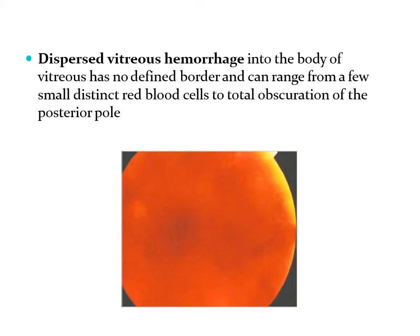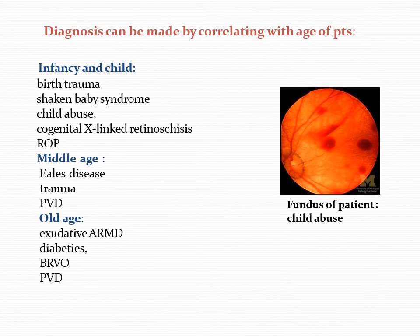In contrast to pre-retinal or sub-hyaloid hemorrhage, which is localized, dispersed vitreous hemorrhage into the body of the vitreous has no defined border and can range from a few small floating red blood cells to total obscuration of the posterior pole. As you can see in the fundus picture, there is such a massive dispersed vitreous hemorrhage that none of the retinal structures are visible. In these cases, you are supposed to do a B-scan ultrasound, and such large vitreous hemorrhage will often need pars plana vitrectomy.